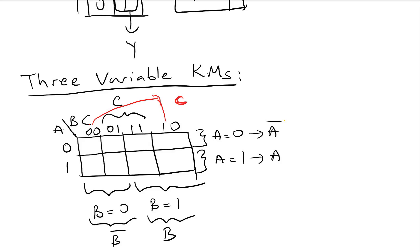We can write the cell values: 000, 001, 011, 010 in the top row, and 100, 101, 111, 110 in the bottom row. This gives us minterm 0, minterm 1, minterm 3, minterm 2, minterm 4, minterm 5, minterm 7, and minterm 6.